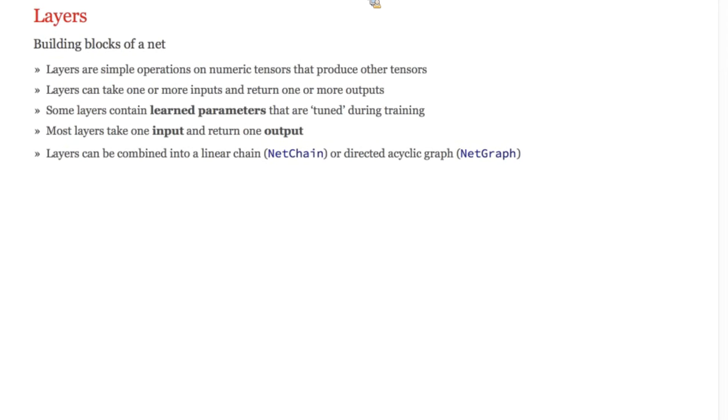Layers are the building blocks of a network. Most layers take a single input tensor and produce an output tensor. Crucially, some layers contain parameters that are modified during training in order to specialize the network to a given task. And layers can be composed as we'll see later.